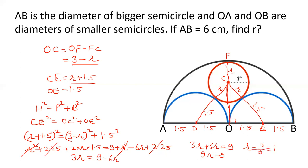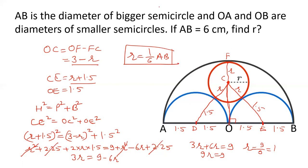So the radius R equals 1 cm — exactly as the shortcut directly told us: R equals (1/6) × AB. Remember this shortcut and you can solve this question in seconds. I hope you liked this video and this shortcut. Please like the video and subscribe to the channel.